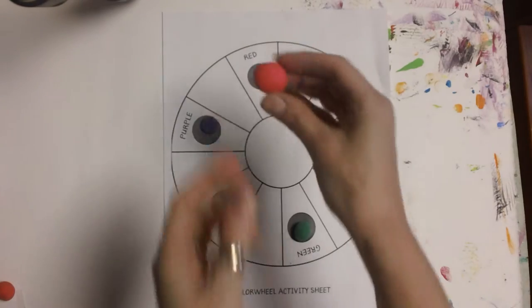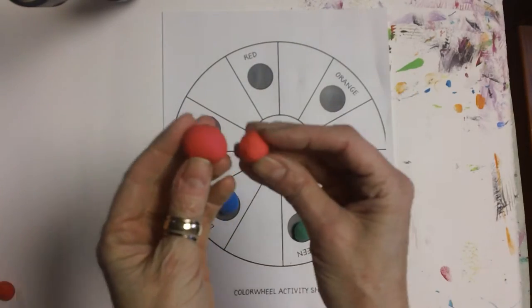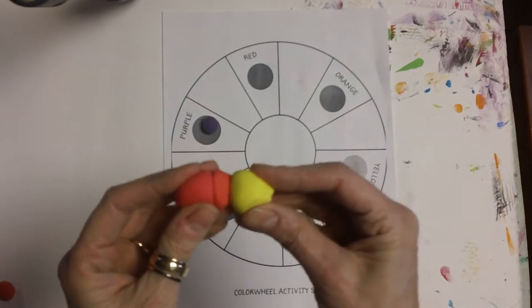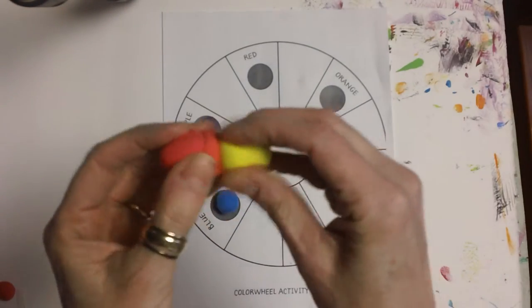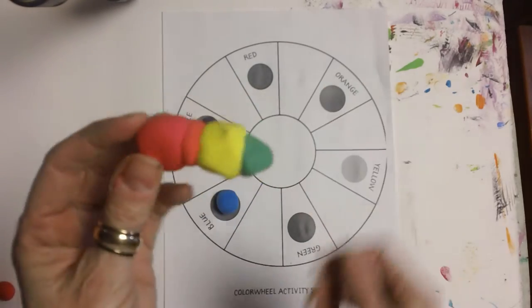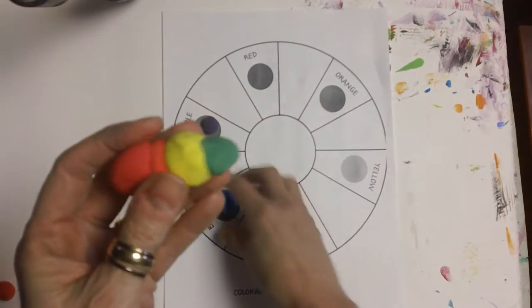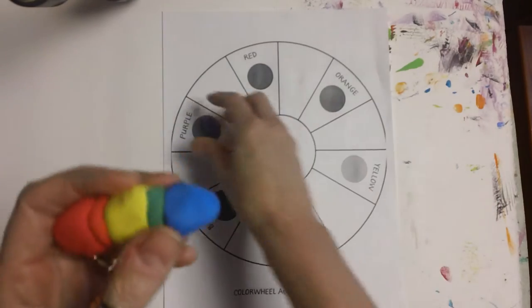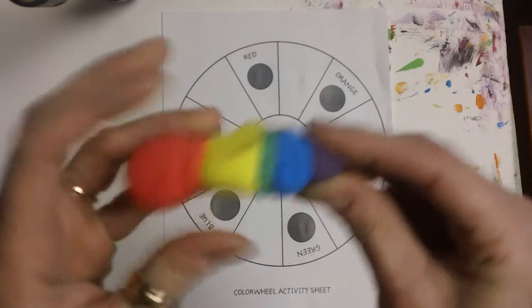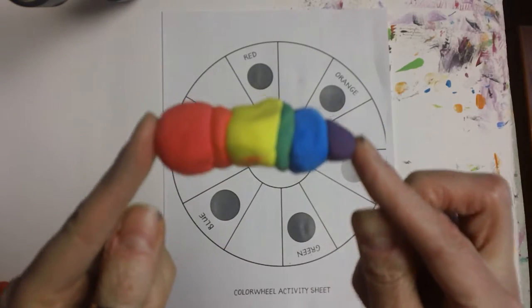So we're going to start. I'm going to put my red, and then I'm going to touch my orange to my red. I'm going to take my yellow and touch that to the orange. And next my green, and you can see they stick together nicely. And then my blue, and then my purple. Already it looks like a rainbow.